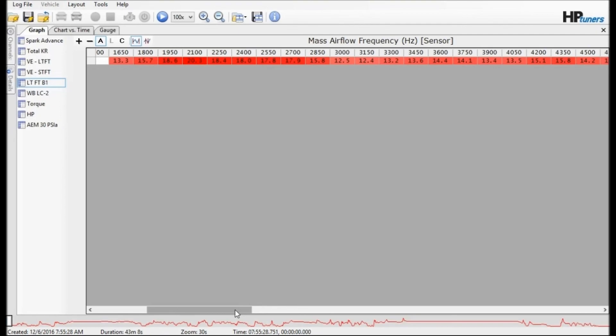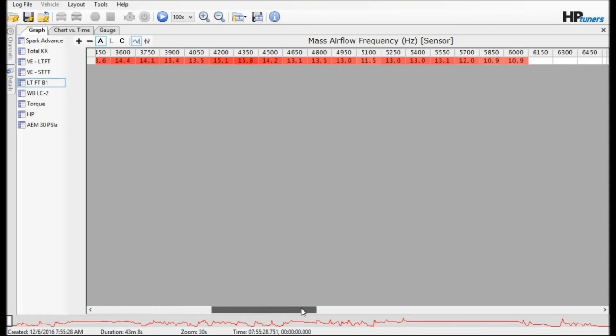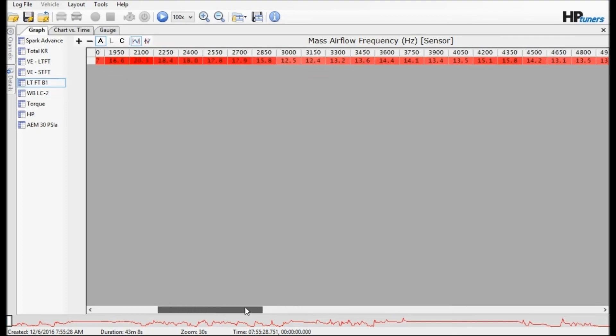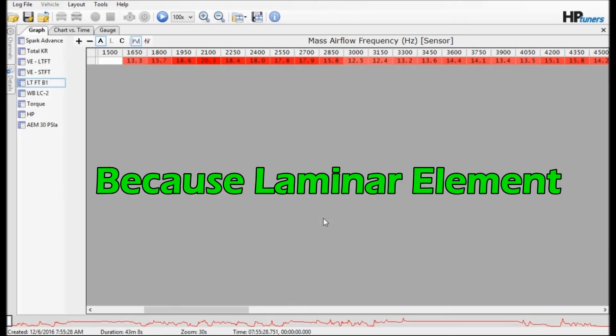Now we're looking at the spacer removed and the honeycomb laminar element inserted. You can see we are more consistently lean across the board, and in theory we did expect that we should be lean, especially across the board.